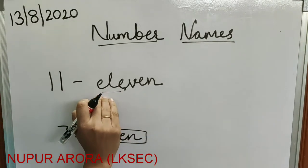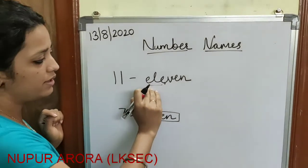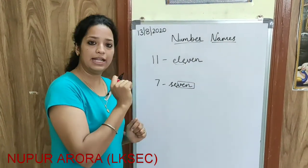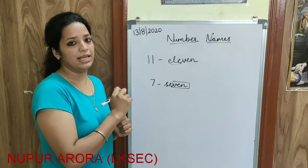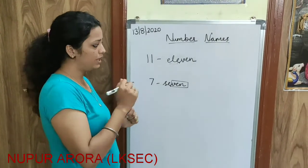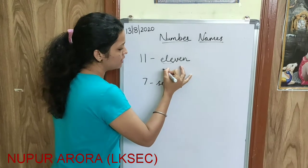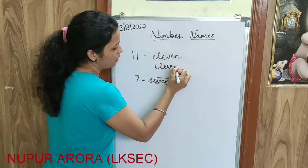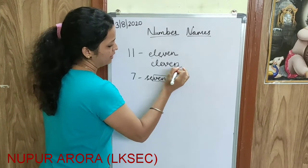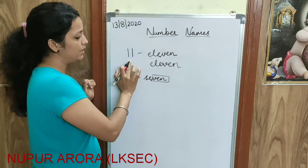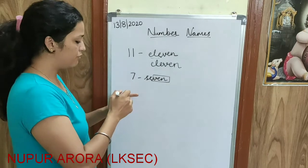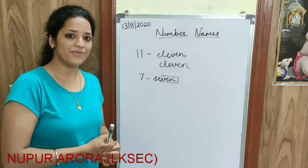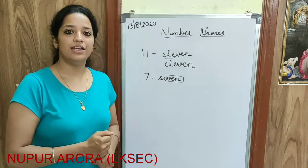You all have already practised cursive writing A to Z, so you have to write 11 in cursive as well — that will keep our practice going. How will you write it? In cursive writing: E, L — without lifting your pen. Like this, you have to write it in your copy. I will give you the format of how to write it. This is all for today. Thank you.